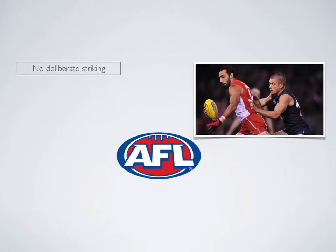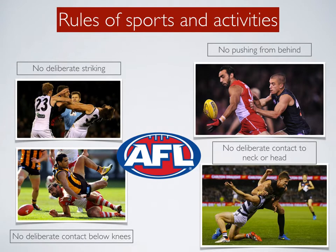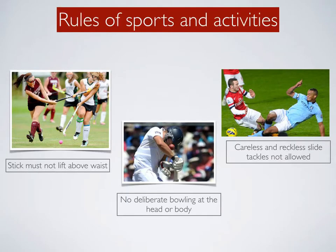The AFL is another game that has a range of rules in place to keep players safe. No deliberate striking, no pushing from behind, no deliberate contact to the head or neck and no deliberate contact below the knees are all designed to ensure successful and safe participation. Likewise, in hockey the stick must not lift above the waist. In cricket, no deliberate bowling at the head or body. And in soccer, careless and reckless slide tackles are not allowed.